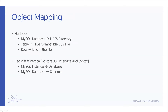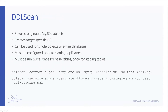For object mapping in Hadoop, a MySQL database maps to an HDFS directory, a table becomes a CSV file, and a row is a line in that CSV file. For Redshift and Vertica, which use Postgres interface and syntax, a MySQL instance becomes a database, a MySQL database becomes a schema, and tables sit under that schema. Redshift and Vertica also use staging tables, which I'll explain in the context of DDL scan.